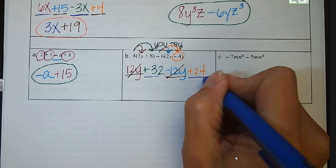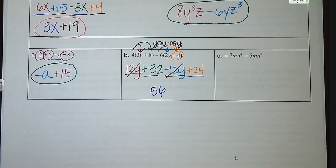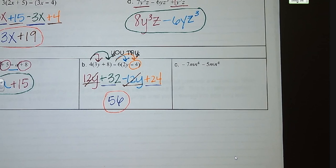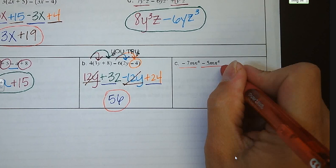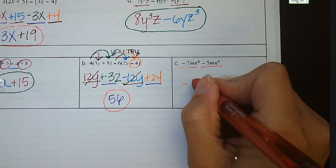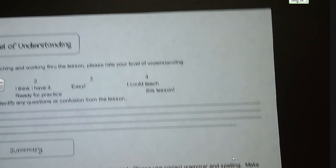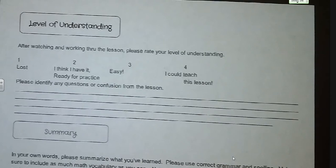Letter C: we have negative 7MN⁴ minus 5MN⁴. We have the exact same variables and exact same exponents, so we subtract our coefficients: negative 7 minus 5 is negative 12MN⁴. Make sure you guys fill out your rating scale on the next page, rate your level of understanding, write the summary for what you learned in this lesson, and write down any questions or confusions you may have. We will take care of them tomorrow. Have a great day — see you in class!